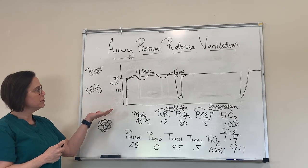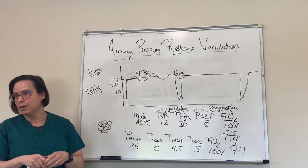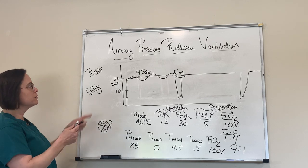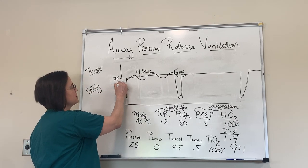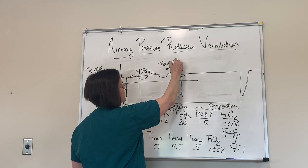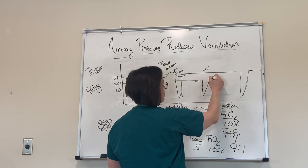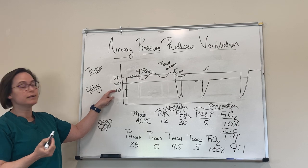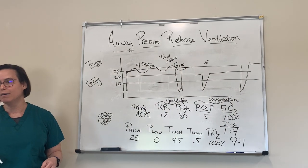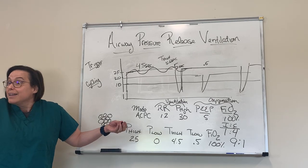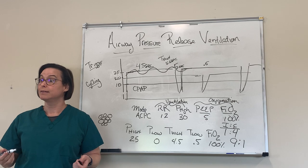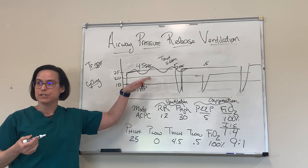So now I have them on this mode — what do I do if they're getting better? Do you start decreasing the P high? Exactly — we call it drop and stretch. So we go from here to maybe 20, and we'll increase our T high to 5.5 seconds. Our T low generally can stay at about 0.5 seconds. Then we do that again for 15. Eventually we sort of drop and stretch to forever land — what do we call it when we're at 10 for forever? That's CPAP. So we titrate them right down to CPAP, and when they're on CPAP we can start doing spontaneous breathing trials and get them off the ventilator. We don't ever have to take them off of this mode — we just drop and stretch it down.